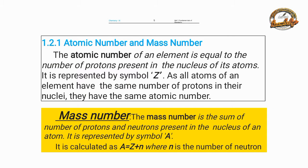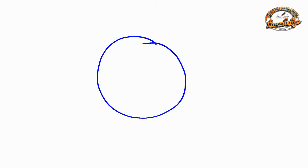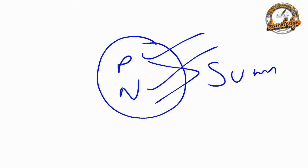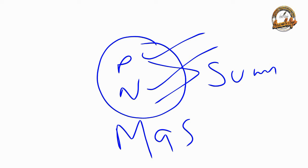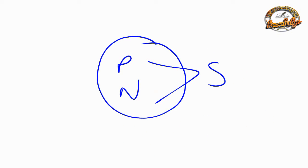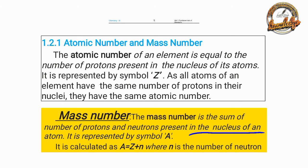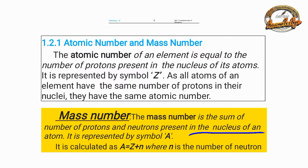Mass number is the sum of the number of protons and neutrons in the nucleus of an atom. This is the mass number. We represent it as A. So the formula is: A equals Z plus N, where A is the mass number, Z is the atomic number, and N is the number of neutrons.